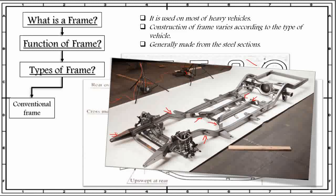These are the body brackets, these are the spring brackets, and this is the inswept of the front, whereas the rear part of the side members are upswept.